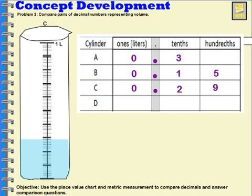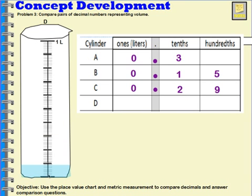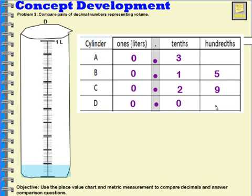Let's take a look at cylinder D. I put a zero for the ones again because it's not completely full, and I have my decimal. But for my tenths, the liquid doesn't go all the way up to the first tenth, so I have zero tenths. And for my hundredths, I'm one away from having ten — so that means nine. There are nine hundredths there.